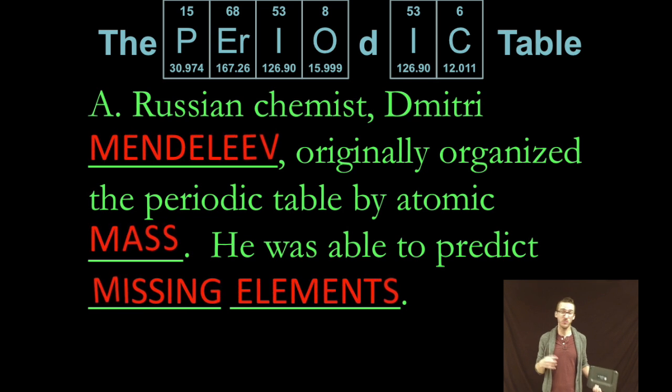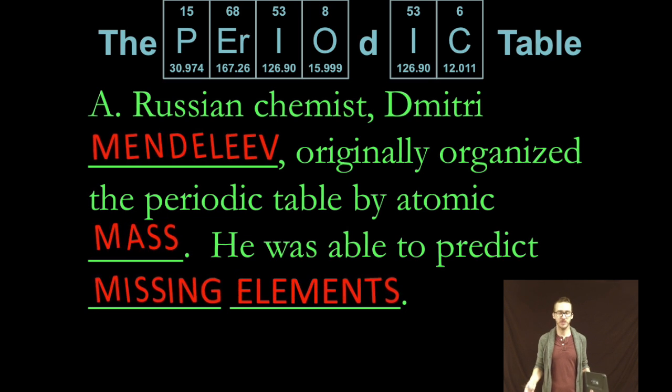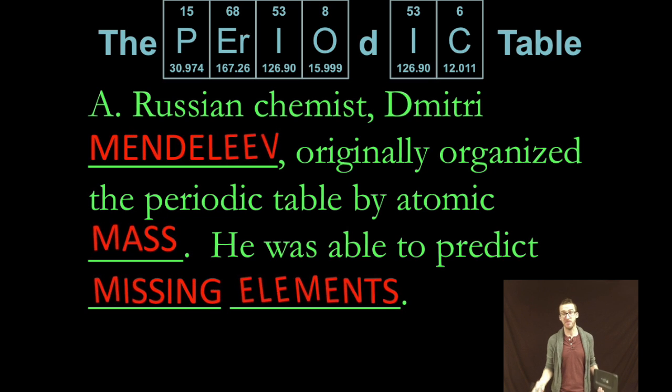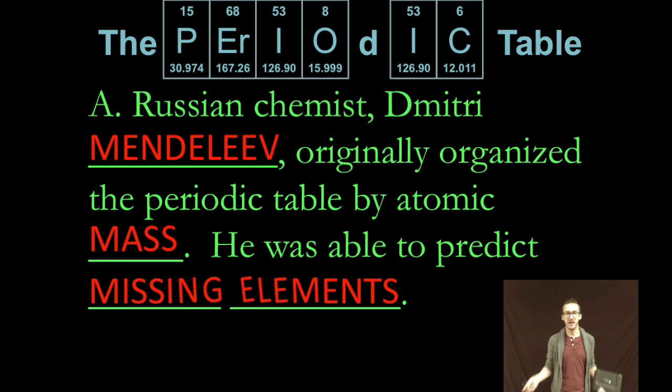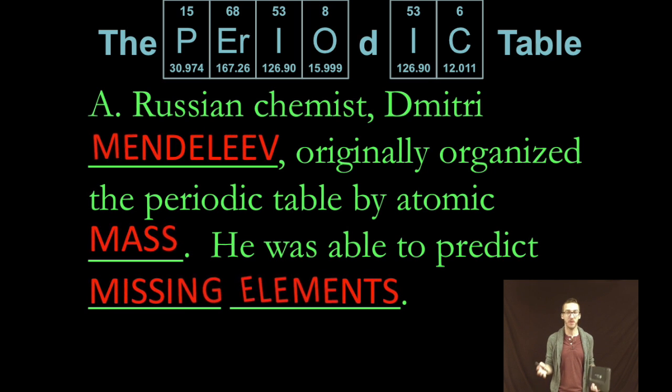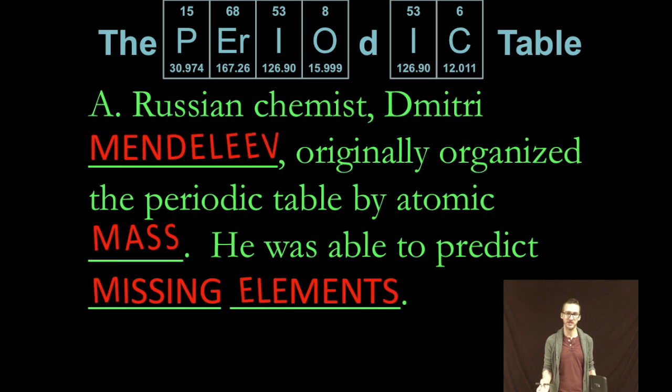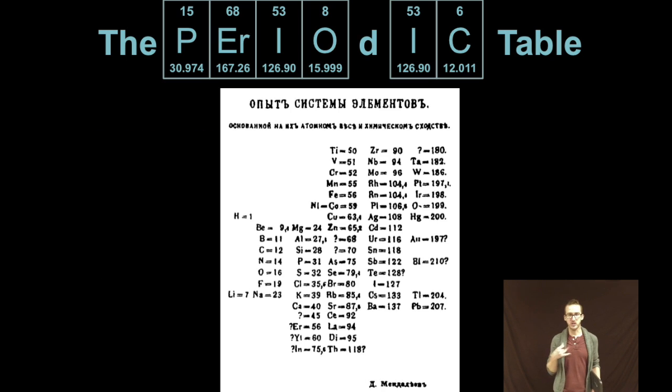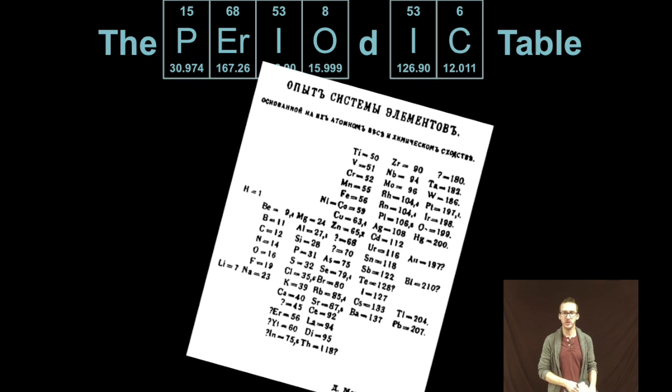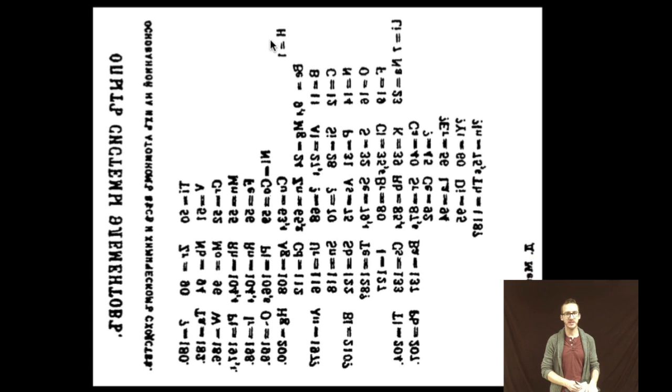So it turns out this Russian dude named Dmitry Mendeleev originally organized the periodic table and he did so by atomic mass. And at the time not all of the elements had been discovered. But based on how he organized them and the patterns that formed based on that organization he was able to predict that there were some missing elements. And so as you take a look at this crazy Russian periodic table it's actually not so crazy. I'm first going to do a little switcheroo then a quick inversion and in fact we start to see how this might look like a modern day periodic table.